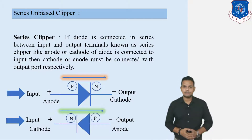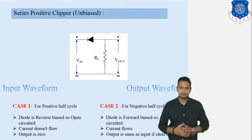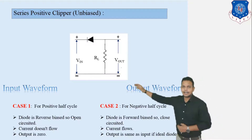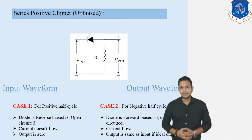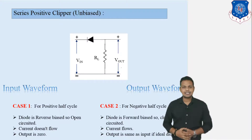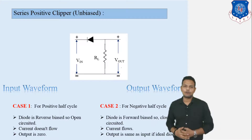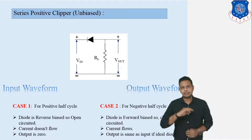Now let us start with our first circuit, which is known as series positive clipper — we can also say unbiased series positive clipper. This circuit diagram is the positive clipper. We are going to discuss two different types of cases: case number one, we consider the positive half cycle; and case number two, we consider the negative half cycle. In short, we are going to enter positive and negative waveforms into this circuit diagram, and according to those waveforms we will get the output.